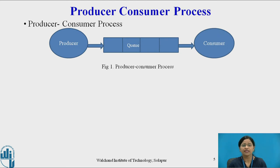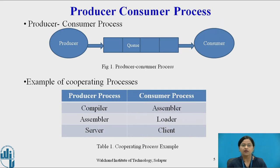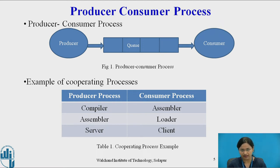Let us see one example of cooperating processes — the producer-consumer process. The producer produces an item which is stored in a buffer, and the consumer consumes that item from the buffer. For example, a compiler may generate assembly code that is consumed by an assembler, which in turn generates object code consumed by a loader. Another example is server and client, where a server produces HTML files and images which are consumed by the client web browser after the client has requested those pages.